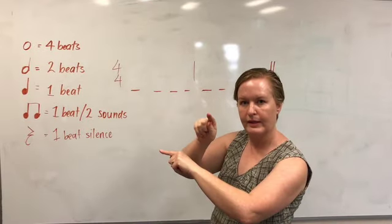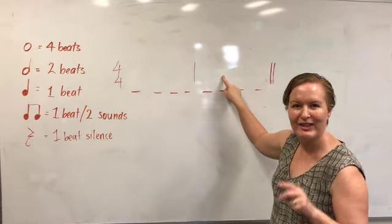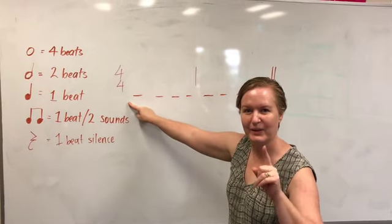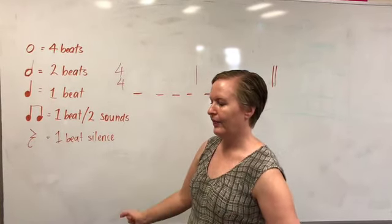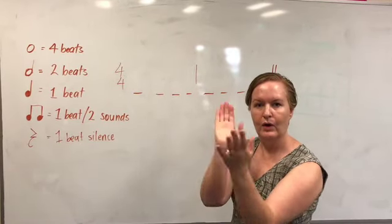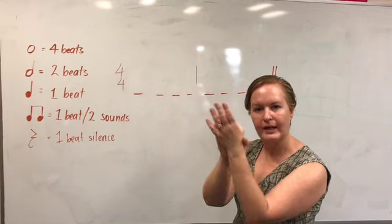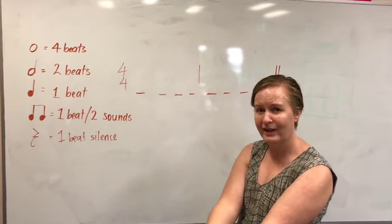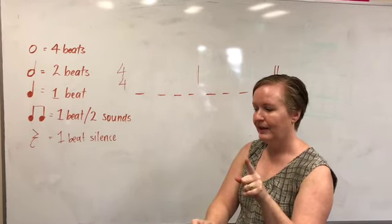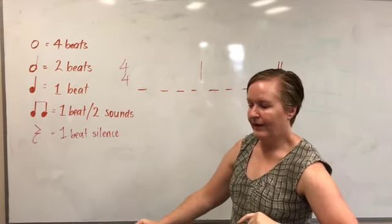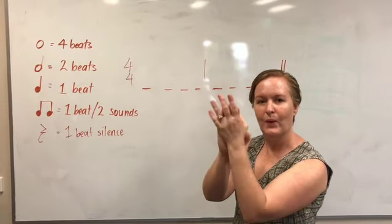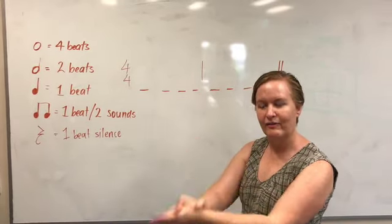Now reverse your thinking — concentrate on the second bar. I'm still going to clap from the beginning: 1, 2, 3, 4. 1, 2, 3, 4. 1, 2, 3, 4. I think you've got it. I'm going to do it once more and then we're going to check the answers: 1, 2, 3, 4. 1, 2, 3, 4. 1, 2, 3, 4.